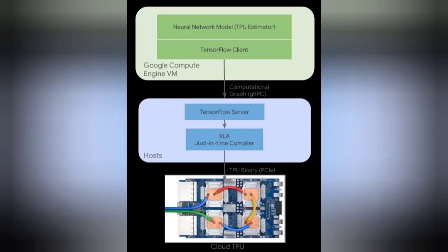When the server receives a computational graph from the TensorFlow client, the server performs the following actions: first, loads inputs from cloud storage; second, partitions the graph into portions that can run on a Cloud TPU and those that must run on a CPU; third, generates XLA operations corresponding to the sub-graph that is to run on Cloud TPU; fourth, invokes the XLA compiler.